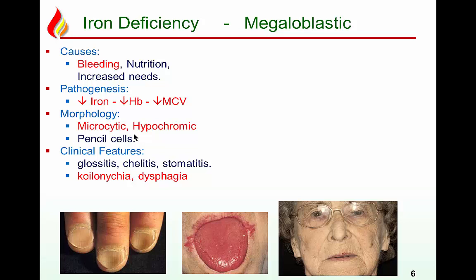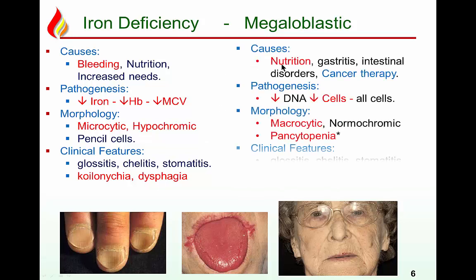Clinically, iron is also necessary for fast-dividing cells such as epithelium, so there is damage in epithelial tissues: glossitis, chelitis, stomatitis. Koilonychia is more characteristic and seen typically only in iron deficiency, not in megaloblastic. Dysphagia is usually due to epithelial disintegration in the esophagus — it can even cause esophageal strictures — known as Plummer-Vinson syndrome.